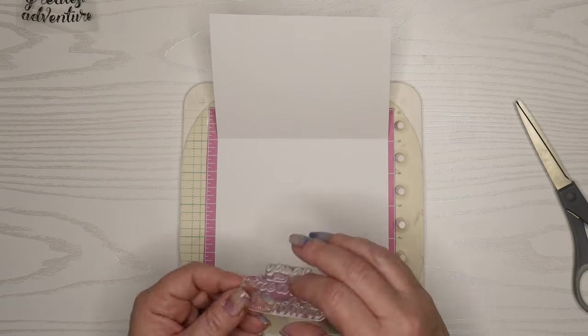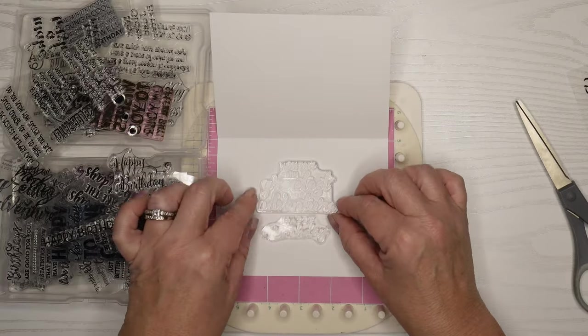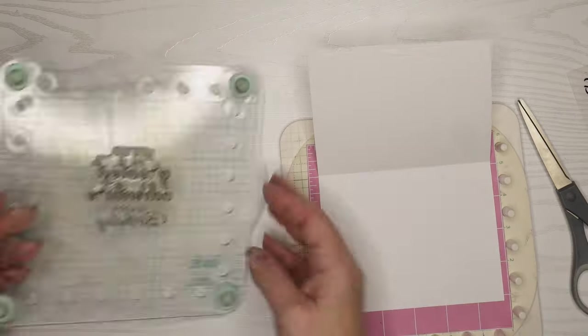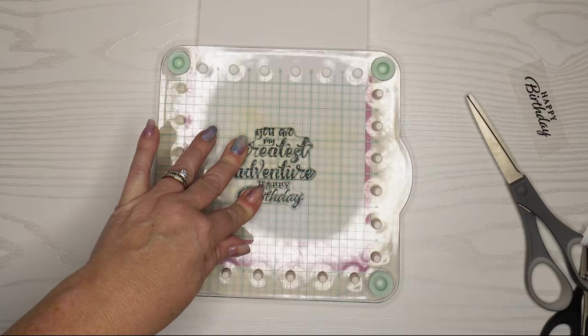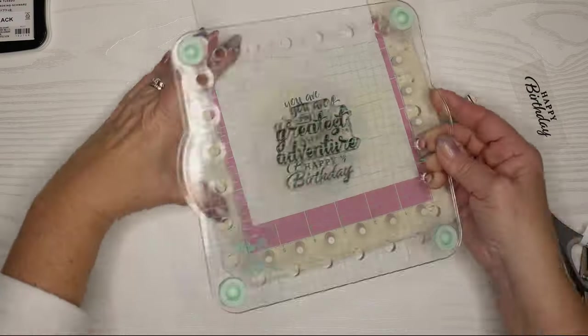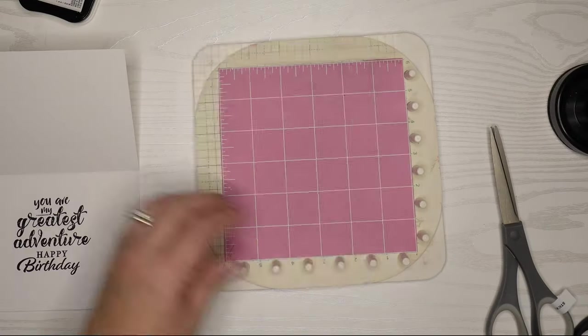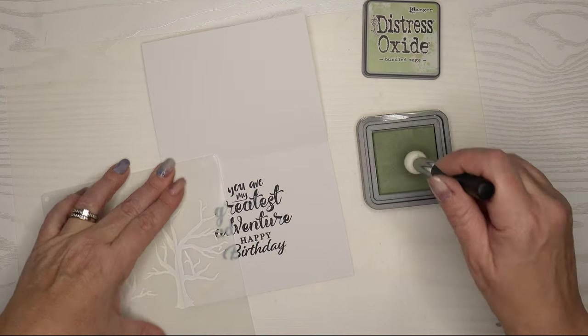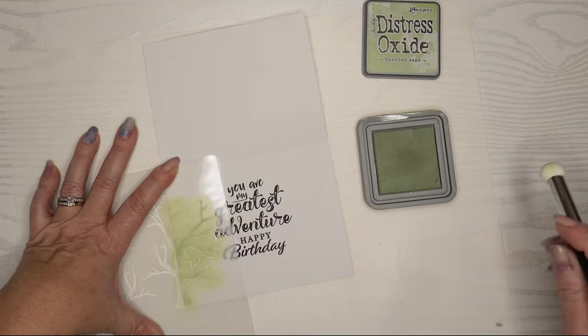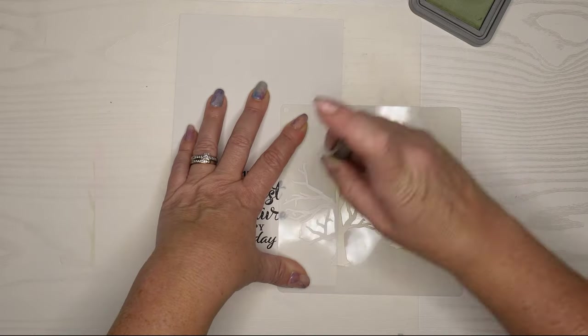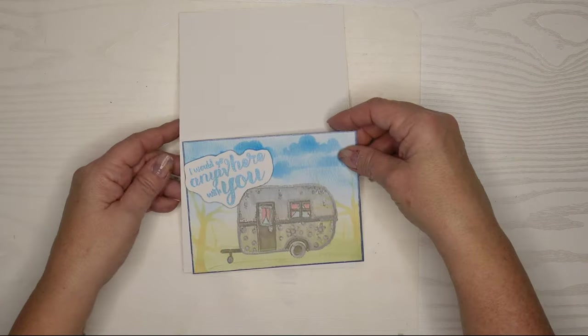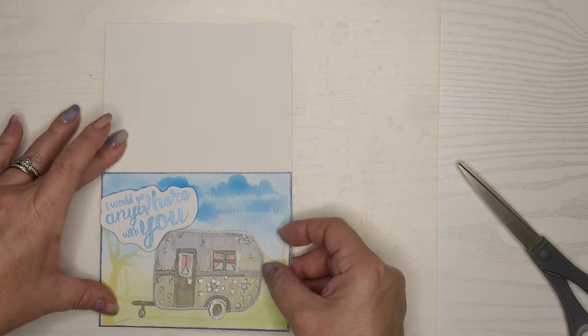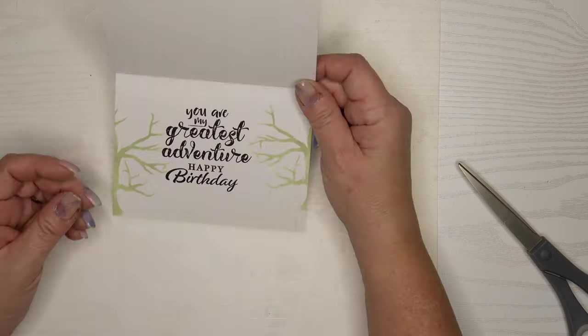So then I'm going to say you are my greatest adventure on the inside. And I'm also going to put a happy birthday sentiment, since neither one of the sentiments were really birthday-ish. And I'm using my Memento black ink. I love Memento black ink for any kind of stamping because it gives a nice crisp image. And I'm going to tie in the front to the inside. I'm going to use some of that bundled sage and create just a pretty shadow of a tree on each side. I just like when I'm able to kind of bring the two in together. So then I'll attach my outside to the card base. And I always try and wait to do this after I've done the inside of the card, just in case I've messed up the inside of the card. So I think that turned out really cute.